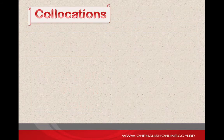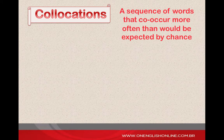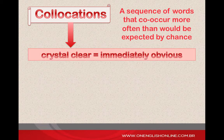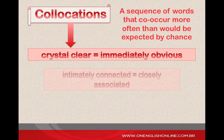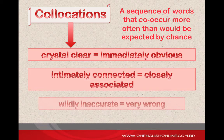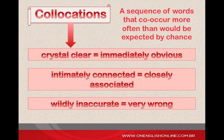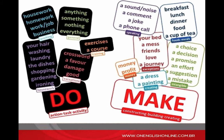A collocation is a sequence of words or terms that co-occur more often than would be expected by chance. Remember some of the expressions used earlier — for example: immediately obvious, intimately connected, wildly inaccurate. These are just a few of the many different types of collocations. Perhaps the best example of collocations refers to make and do. So before we call it a day, let me give you a piece of advice.